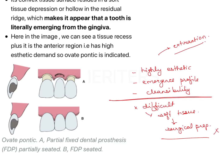Ovid Pontic can also have a modification with some limited palatal coverage and thinning of the buccal and labial area, which is called Modified Ovid Pontic. There is also a squarish modification of the Ovid Pontic known as E-Pontic or Aesthetic Pontic, which we will not discuss in detail right now.